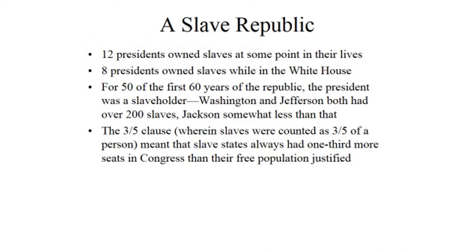The United States was a slave republic. Slavery was written into the Constitution with the Three-Fifths Compromise and was a large part of Southern identity. Many people were fighting for the right to own other people because their economy and society were based in it. Twelve presidents owned slaves at some point; eight owned slaves while in the White House. For 50 of the first 60 years of the republic, the president was a slaveholder. Washington and Jefferson both had over 200 slaves, so slavery was a major part of society and of politics.